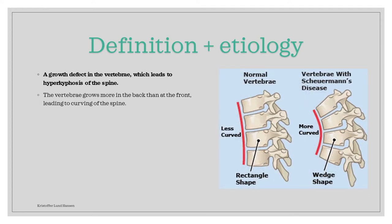More specifically, what happens is that the posterior part grows faster than the anterior side. This abnormal growth leads to the spine being curved more forward, since the posterior part grows more. This fast growth of the posterior side also leads to a distinct shape. When viewed from the side, normal vertebrae has a rectangular shape, but in Scheuermann's disease, the vertebrae becomes more wedge-shaped.